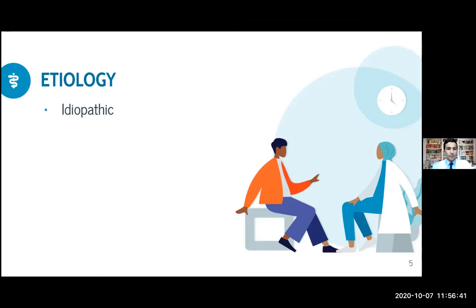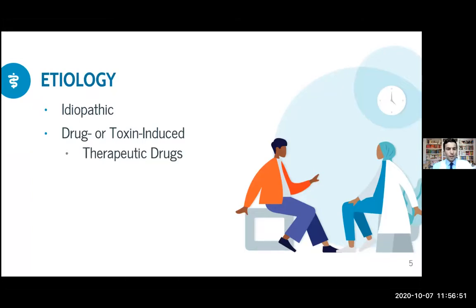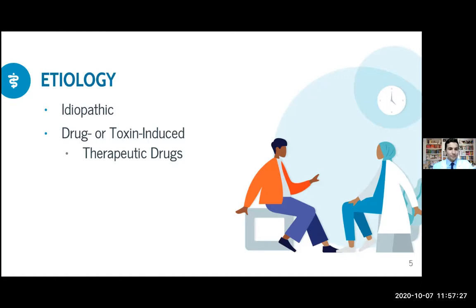The one we're going to concentrate on today is drug-induced Parkinsonism. When you think about drugs that actually cause Parkinson's disease — do you recall any? Any that would inhibit dopamine receptors? Like antipsychotics and metoclopramide. How would you treat these? You'd stop the offending agent or the drug.